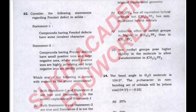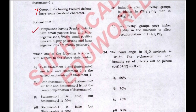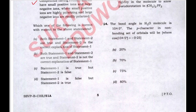The next question asks about Frenkel defect in solids. Statement one says compounds having Frenkel defects have some covalent character — this is incorrect, because Frenkel and Schottky defects are both shown by ionic crystalline solids. Statement two says compounds with Frenkel defects have small positive ions and large negative ions, where small positive ions are highly polarizing and large negative ions are readily polarized — this statement is correct. So the correct answer is D: statement 1 is false but statement 2 is true.